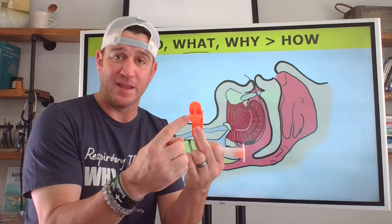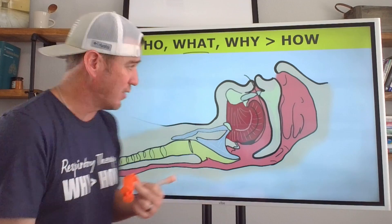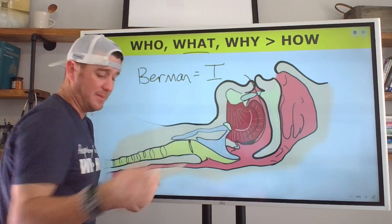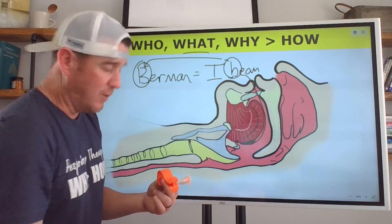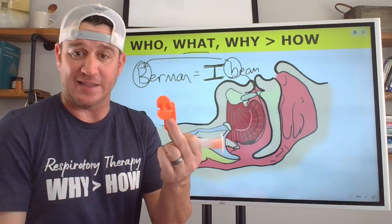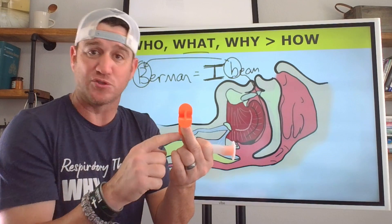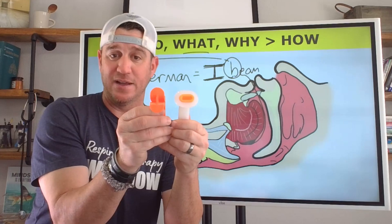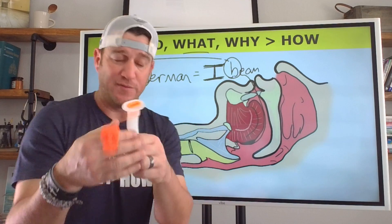The other option is a Berman airway, or Berman OPA. The Berman looks like an I-beam — Berman equals I-beam, that's how to remember it. When we think about the letter I, we realize there are two channels that we can utilize to suction a patient: two parallel channels on each side of the center beam running down the OPA. So the Goodell has a center channel and the Berman has two parallel channels down each side.